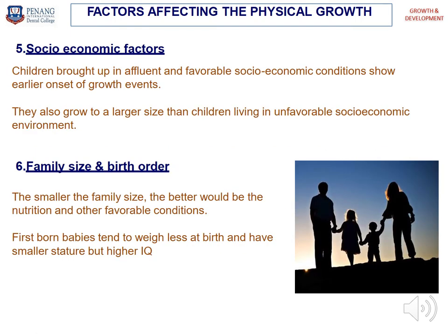The next factor is socio-economic. Children brought up in a favorable socio-economic background show early onset of growth events and grow to a larger size than children living in poor socio-economic environments. Then, family size and birth order: the smaller the family size, the better the nutrition and other favorable conditions. First-born babies tend to weigh less at birth and have smaller stature but higher IQ.